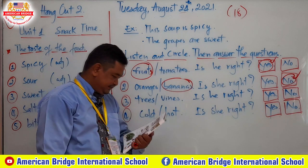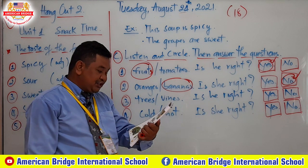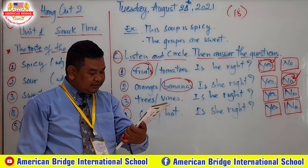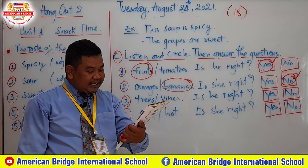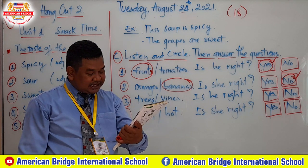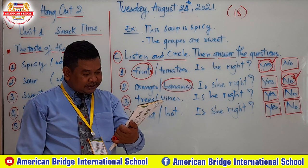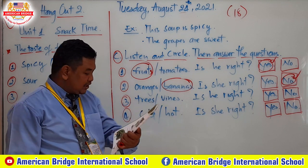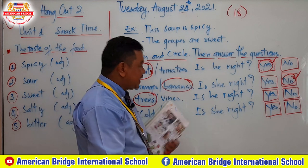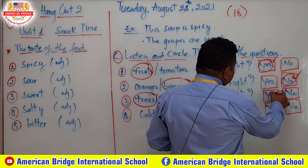Moving to number 3: apples and bananas grow on trees or vines. You hear the word 'tree' — apple and banana grow on a tree. Is that correct? Yes, he is correct. So you have to choose yes.